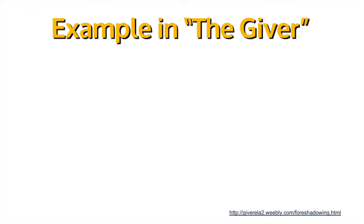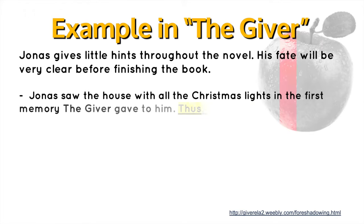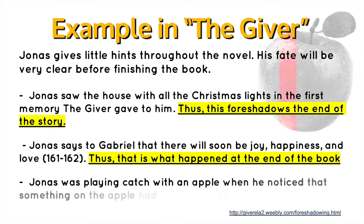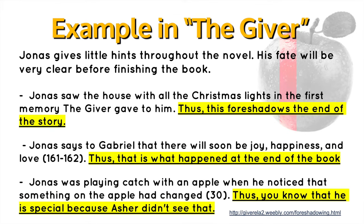Now let's take a look at an example in The Giver. Jonas gives little hints throughout the novel, and his fate will be very clear before finishing the book. Jonas saw the house with all the Christmas lights in the first memory the Giver gave to him — this foreshadows the end of the story. Jonas says to Gabriel that there will soon be joy, happiness, and love — that is what happened at the end of the book. Jonas was playing catch with an apple when he noticed that something on the apple had changed, showing he is special because Asher didn't see that.